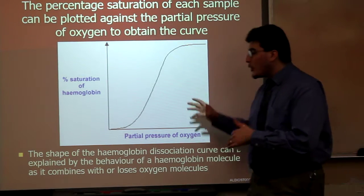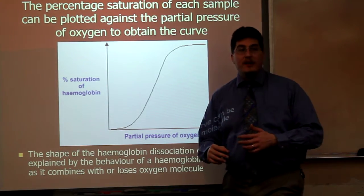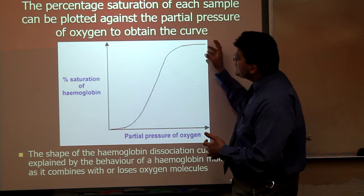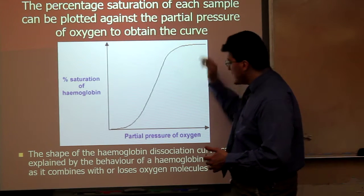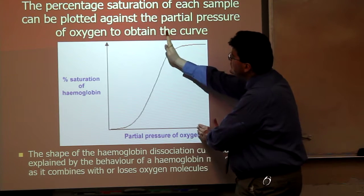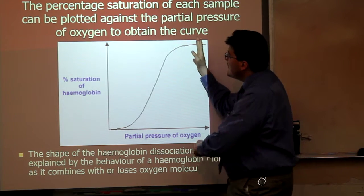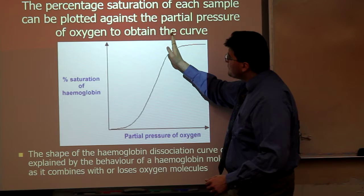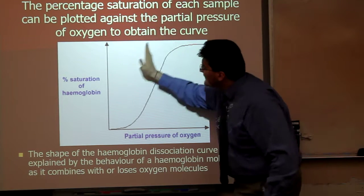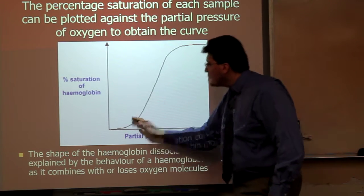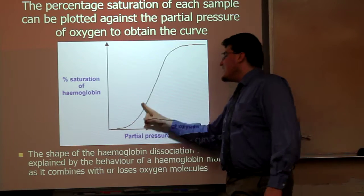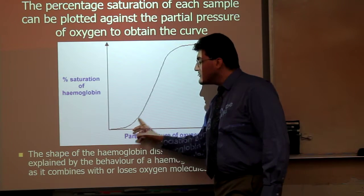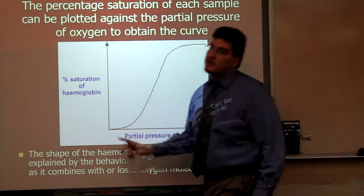This curve indicates that hemoglobin is very difficult to remove that first oxygen. It takes a significantly low partial pressure of oxygen to remove the first oxygen, and then the second and third oxygens are easier to remove. There's a sharp decline, and then that last final oxygen is significantly more difficult.